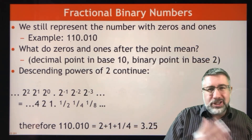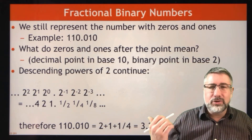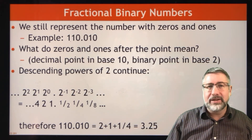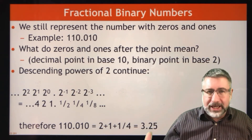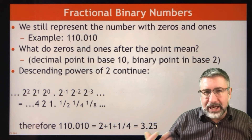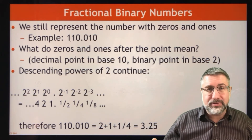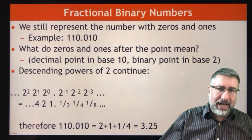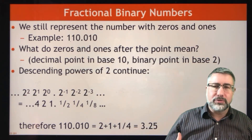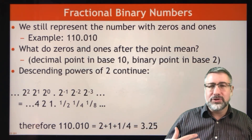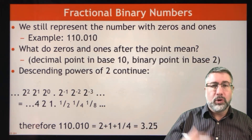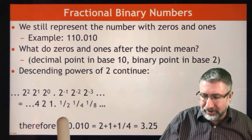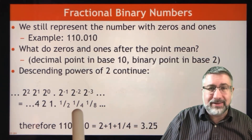But if we just go the other direction and use negative powers instead — 2 to the negative 1, 2 to the negative 2, 2 to the negative 3 — these are fractional powers of 2 and this gives you 1 over 2, 1 over 4: a half, a quarter, an eighth.